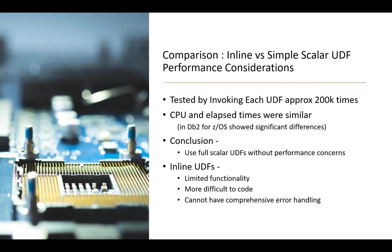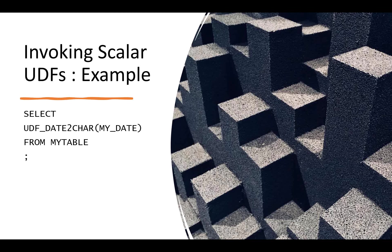A scalar UDF means for each set of input parameters, you get a single value returned — essentially generating a column within your result set. Here's an example: the UDF date_to_character takes a date and reduces it to a single column in the result set, as you would expect.